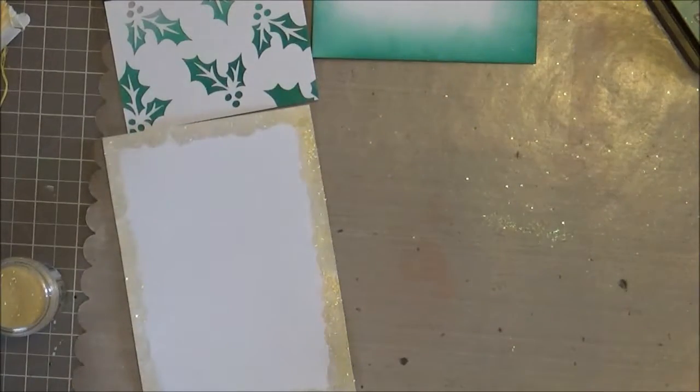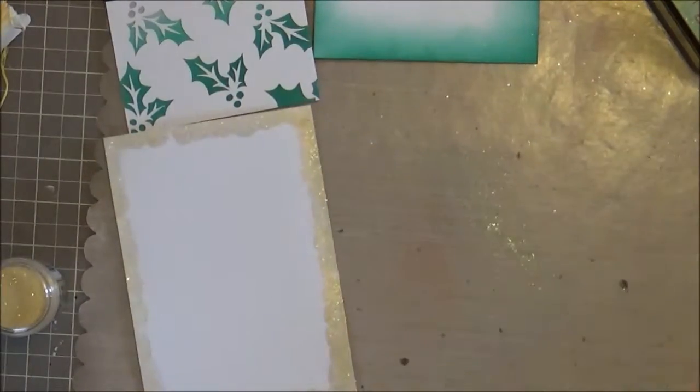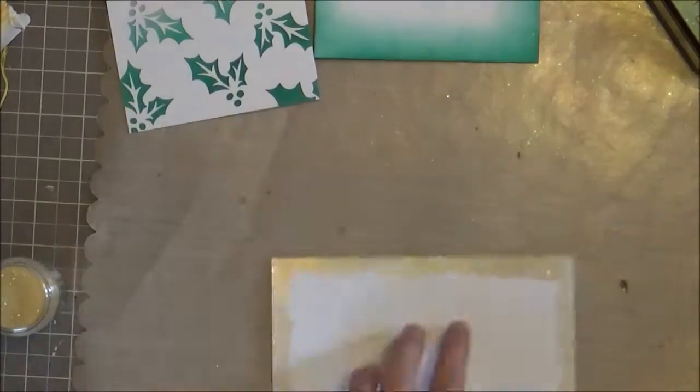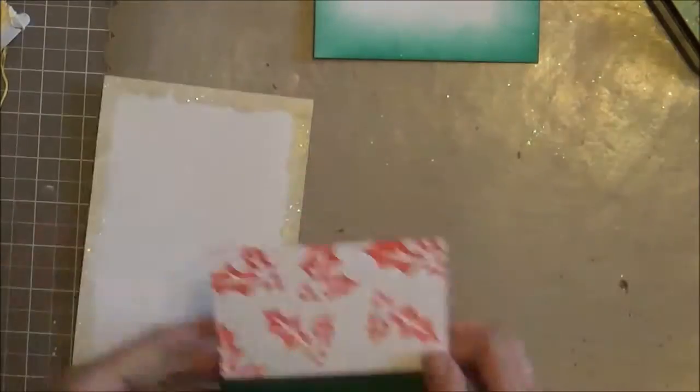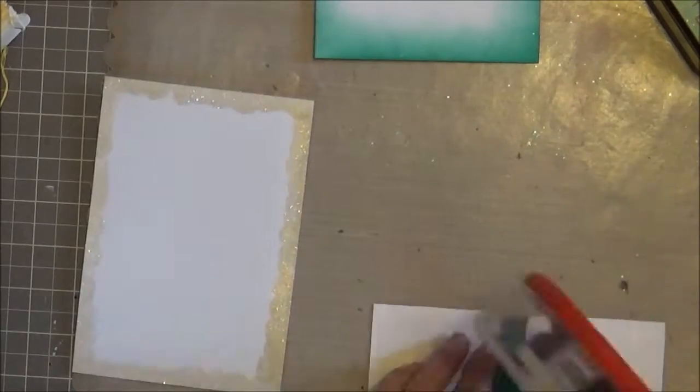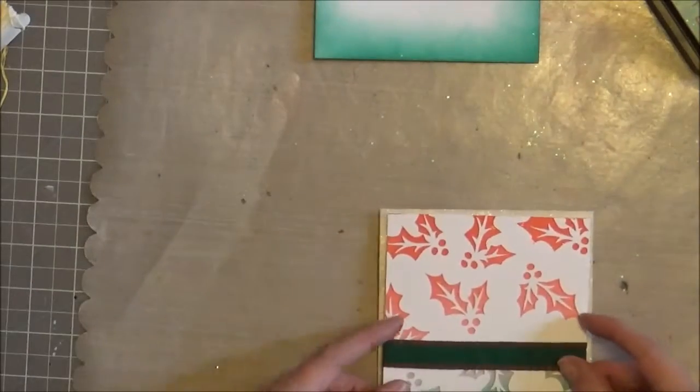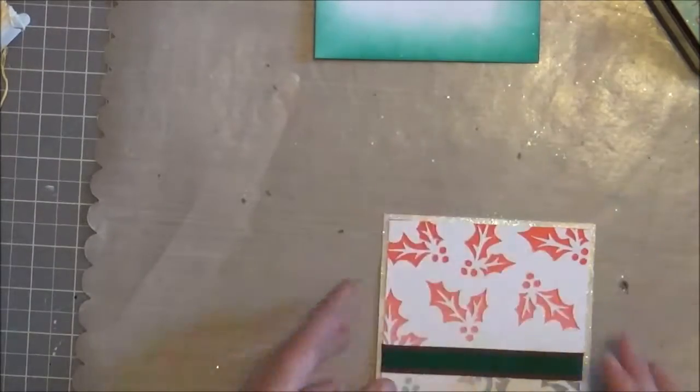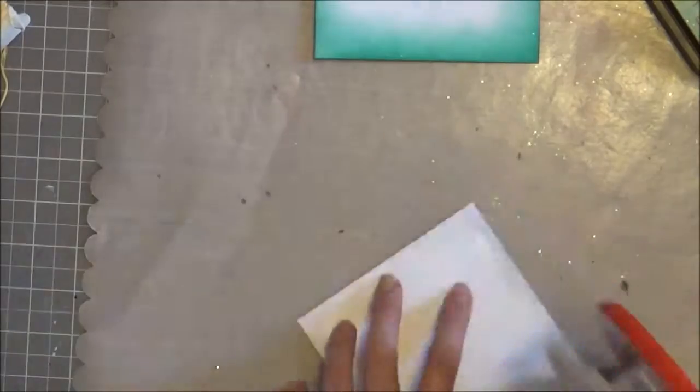Now I'm going to assemble the background of my card. I'm just going to use my ATG gun and tape down my holly background onto the gold glitter mat, and then the gold glitter mat onto my green mat.